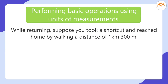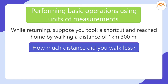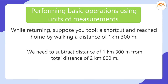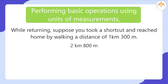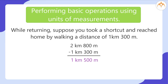Another example: while returning, suppose you took a shortcut and reached home by walking 1 kilometer and 300 meters. How much less distance did you walk? We subtract 1 km 300 m from the total distance of 2 km 800 m: 2 km 800 m − 1 km 300 m = 1 kilometer and 500 meters. Hence, you walked 1 kilometer and 500 meters less.